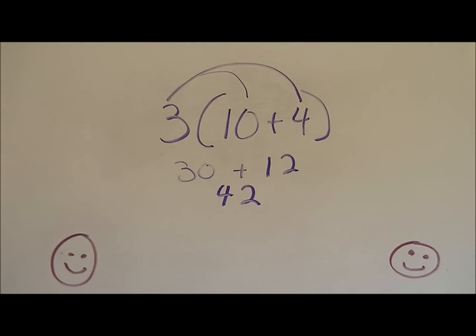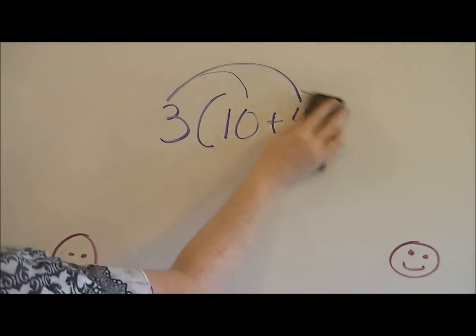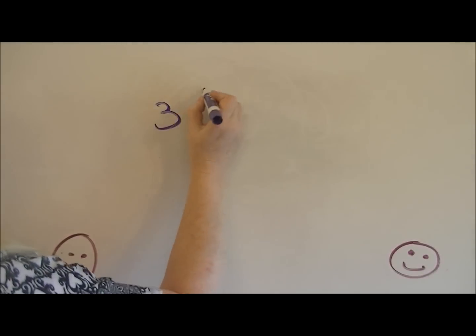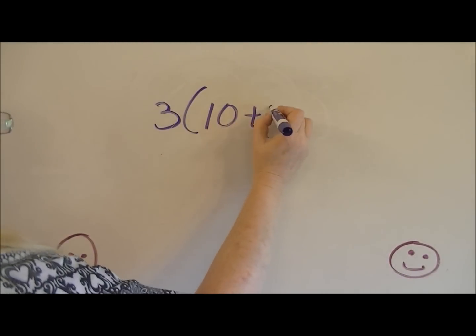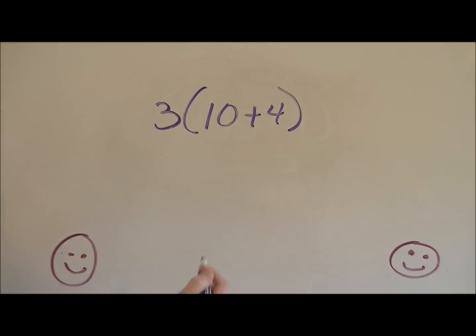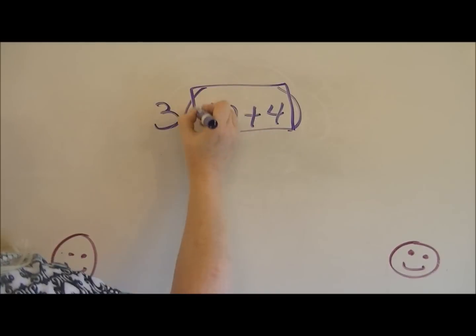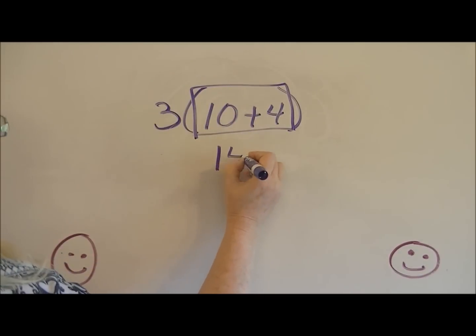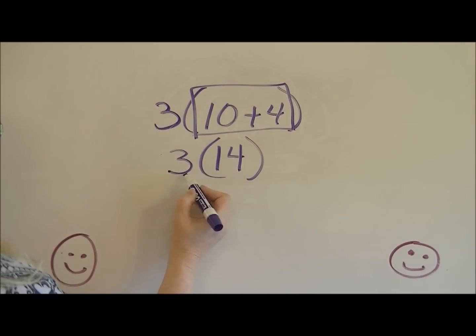Well, let's look at one other way that you can do this. You're supposed to start with the parentheses first according to the order of operations. So I should combine these two numbers together. 14 times 3. And 3 times 4 is 12. Carry 1. 3 times 1 is 3 plus 1 is 42.